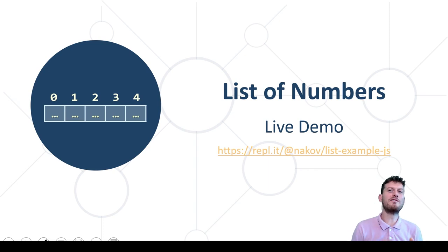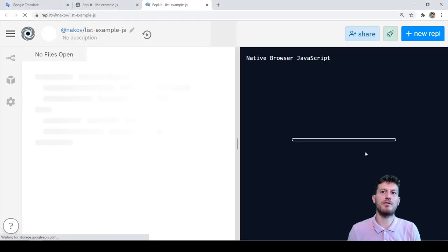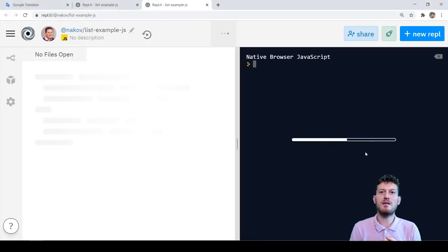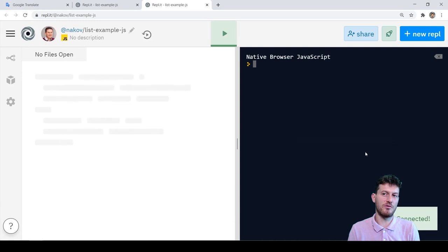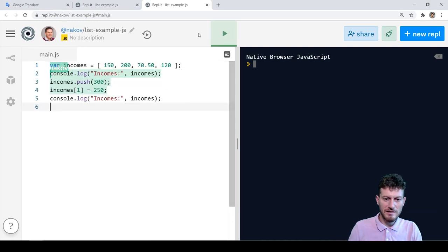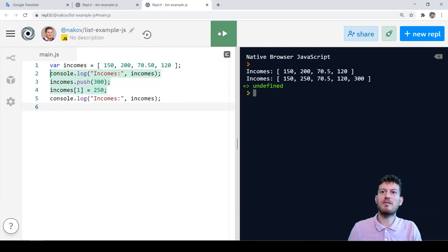This live demonstration illustrates how to use simple lists in JavaScript. We open the live example at repl.it and we wait for it to load. It needs some time. This is the same example from the previous slide. We run it and we see the result, the list before and after the modifications.